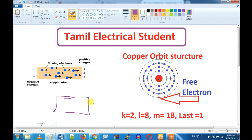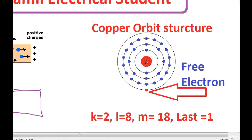What is the atom? You can take an atom. We have 29 electrons. This is the copper atom.